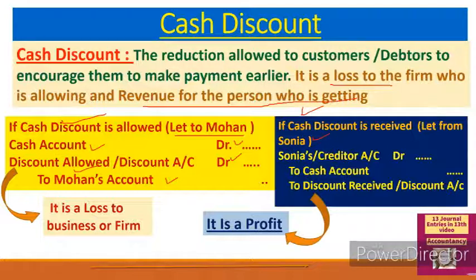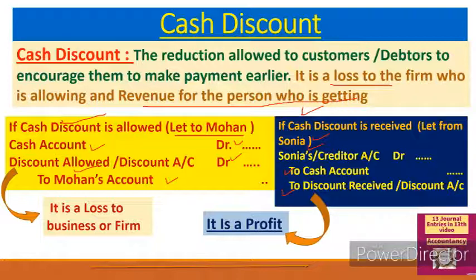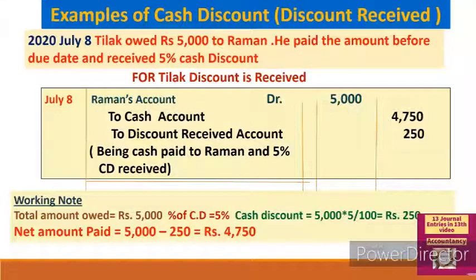Second case — if cash discount is received: suppose we have to make payment to our creditor Sonia. Cash discount is received because we made early payment to Sonia. Sonia is the receiver — personal account — Sonia's account is debited. Cash goes out of business — cash account credited. Discount received is income — nominal account, income is credited. So the entry is: Sonia's account debit, cash account credit, discount received account credit — being payment made with cash discount received.